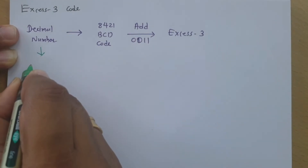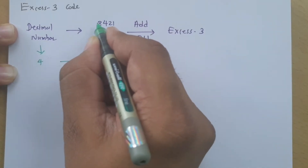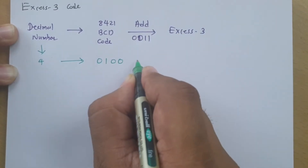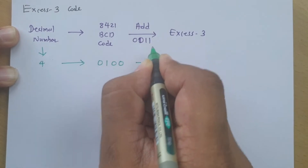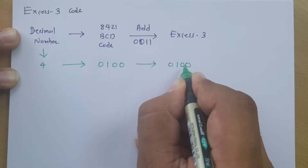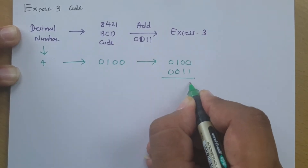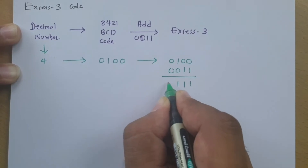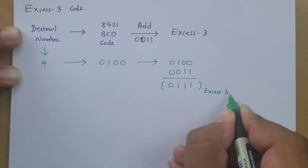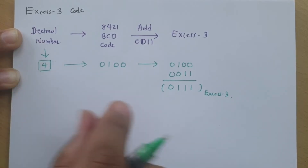Let us understand this with an example. Take decimal number 4. We represent 4 in BCD 8421 as 0100. Now if we add 0011 to this, we get: 0100 plus 0011, resulting in 0111. So 0111 is the Excess-3 code of decimal 4. That is how we can convert any decimal number into Excess-3 code.